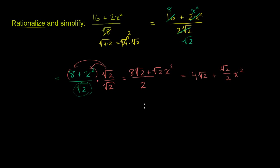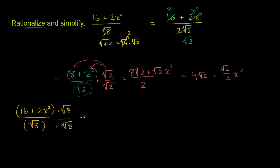There are multiple ways to do this — we could have rationalized right from the get-go. Starting with our original problem, 16 plus 2x squared all over the principal square root of 8, we could rationalize from the start by multiplying numerator and denominator by the principal square root of 8. In the denominator we just get 8, and in the numerator we get 16 times the principal square root of 8 plus 2 times the principal square root of 8 times x squared. Now we can try to simplify this a little bit more.